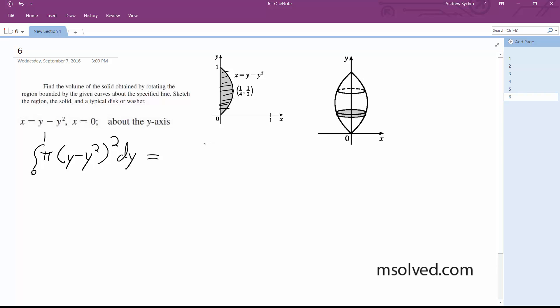When we integrate this, what we end up with is pi times y to the 4th minus 2y cubed plus y squared dy.